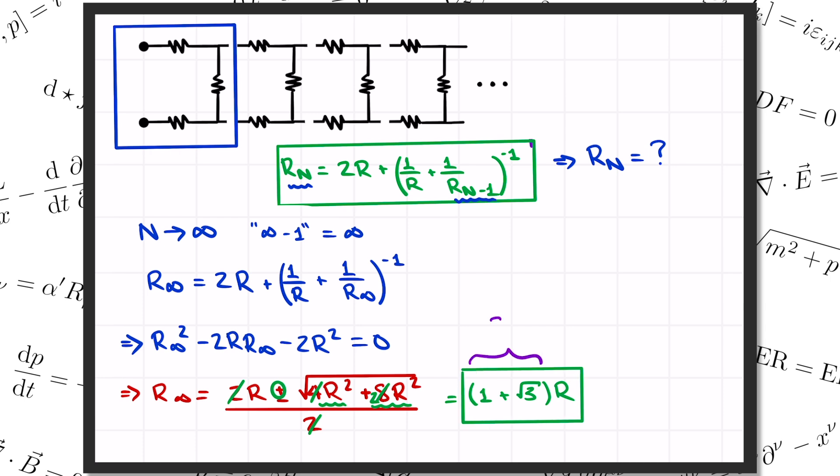Numerically, 1 plus the square root of 3 is about 2.73, which just like we expected is between 2R and 3R.